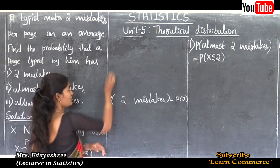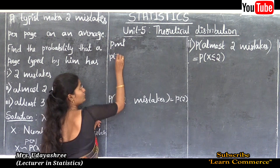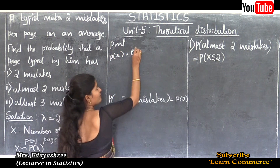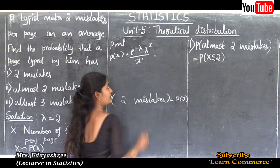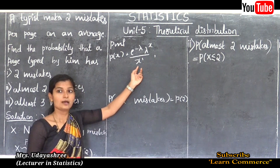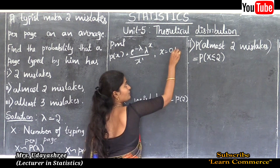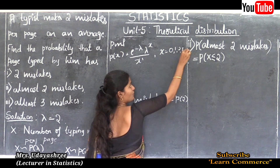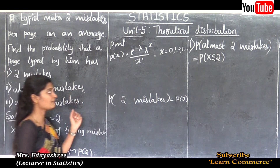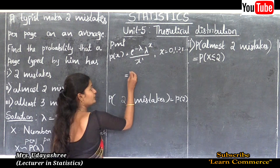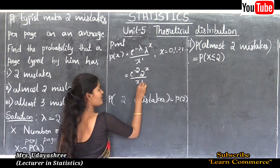Next, I will write the probability mass function: P(x) = e to the power minus lambda, times lambda to the power x, divided by x factorial. We don't know the range of the Poisson distribution, so x = 0, 1, 2, 3, and so on. Substituting lambda equal to 2: P(x) = e to the power minus 2, times 2 to the power x, divided by x factorial, where x = 0, 1, 2, 3, and so on.